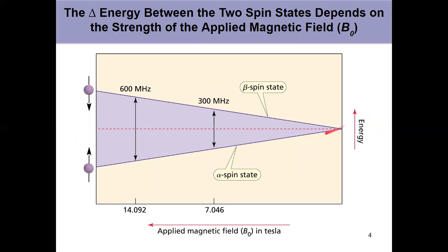The stronger the applied magnetic field, the greater the energy difference between the two spin states. So as we see here, going from right to left, we're getting a stronger applied magnetic field, and that's increasing the energy difference there.